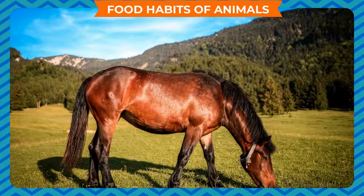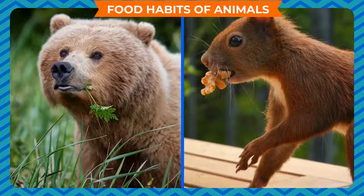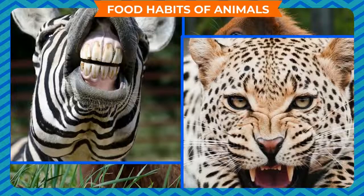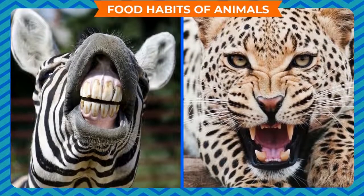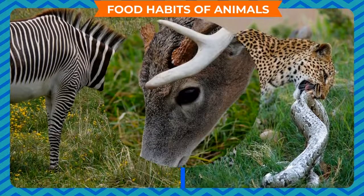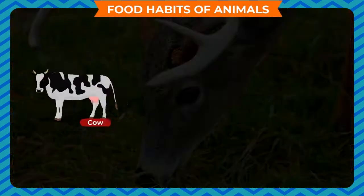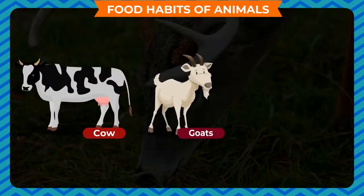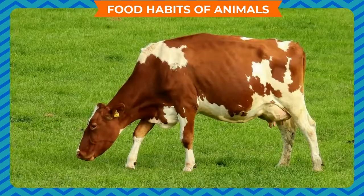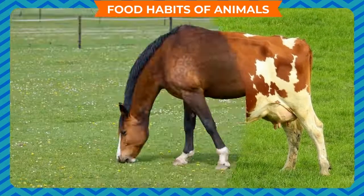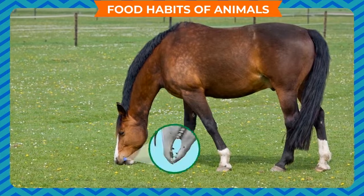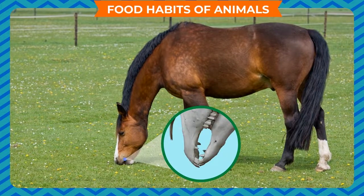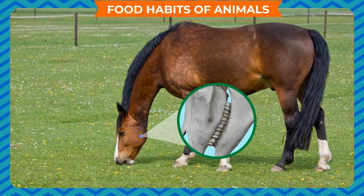Food habits of animals: animals need food to grow and survive. Different animals eat different types of food, and their teeth and other body parts suit the type of food they eat. Some animals such as cow, goat, and horse eat only plants — they are called herbivores. They have sharp front teeth to bite their food and broad back teeth to grind the food easily.